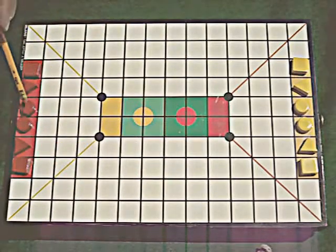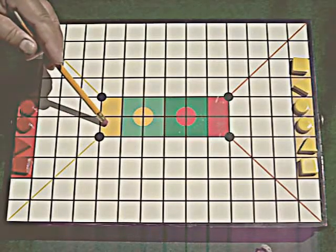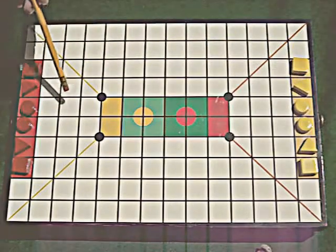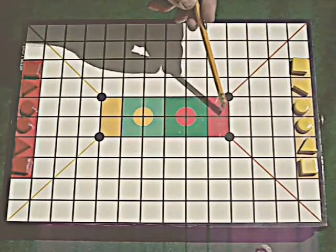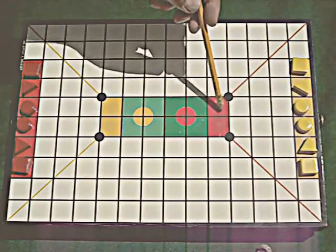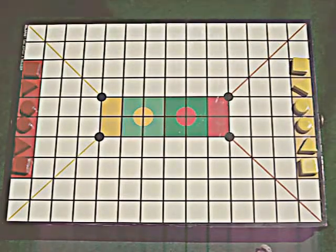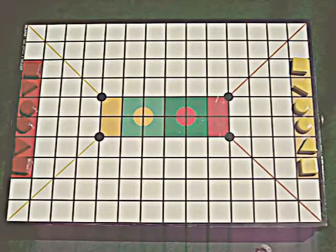And red cannot occupy a yellow entry square and send yellow back. And yellow can't occupy a red square and send a red one back. So those are the fundamentals of Relapse.